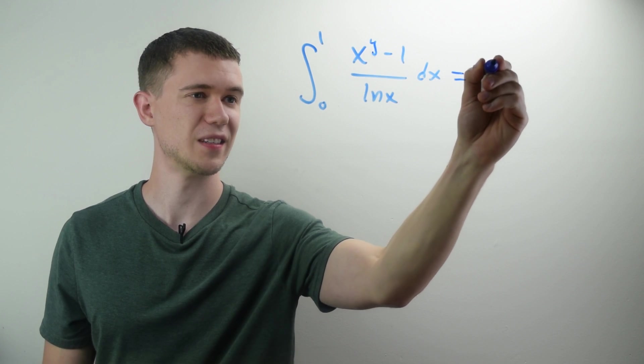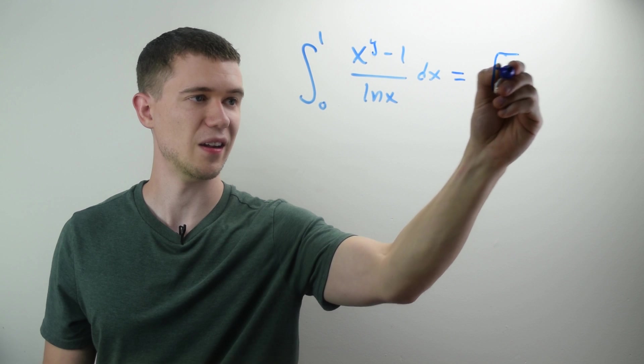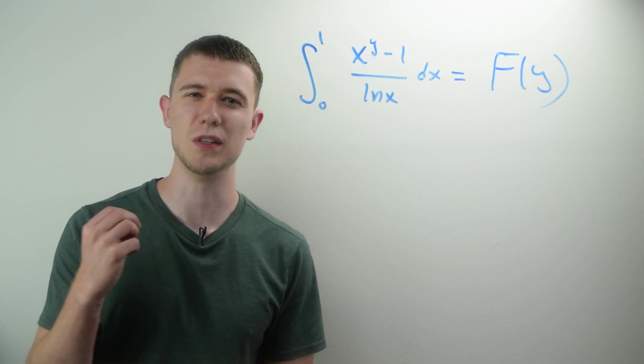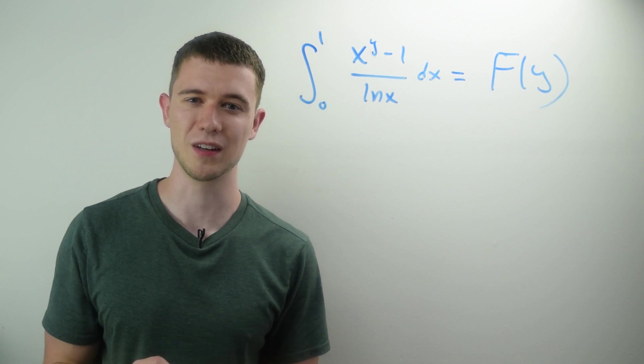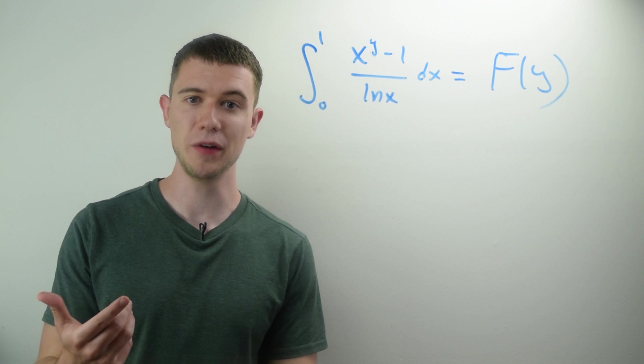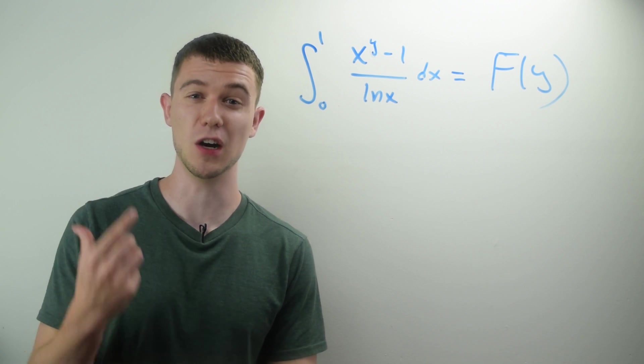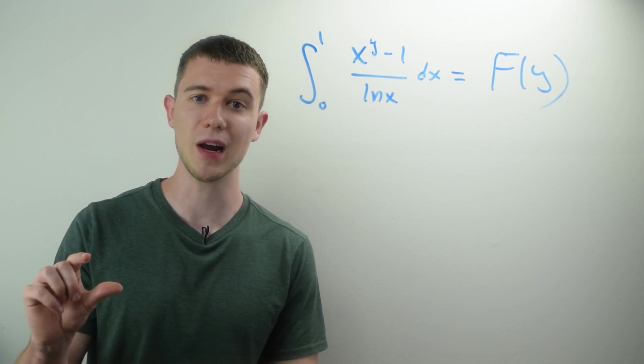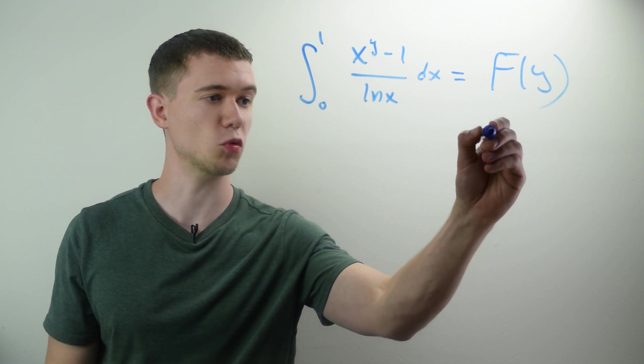And I'm going to define this as my f of y, just like we did with the presentation of this trick. And now what we're going to do is we're going to take the derivative of both sides, differentiation under the integral sign. So we're going to derive with respect to y. So what does this mean?